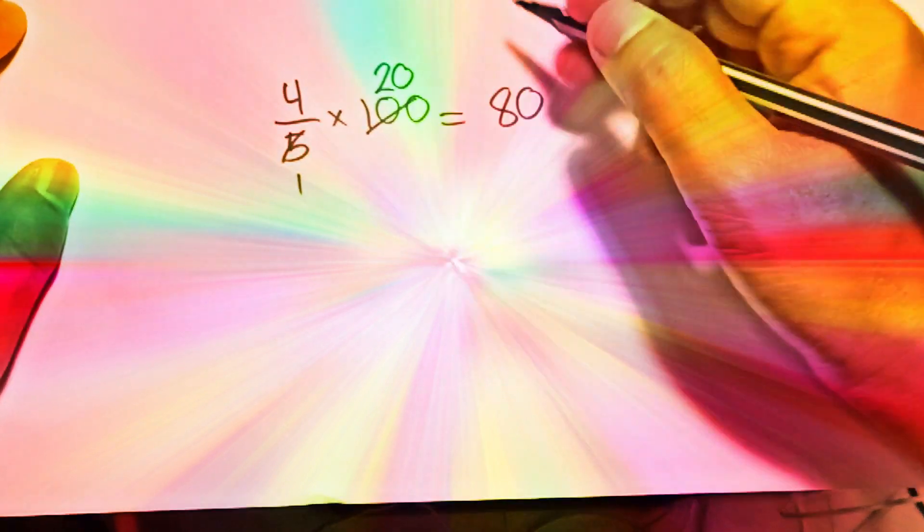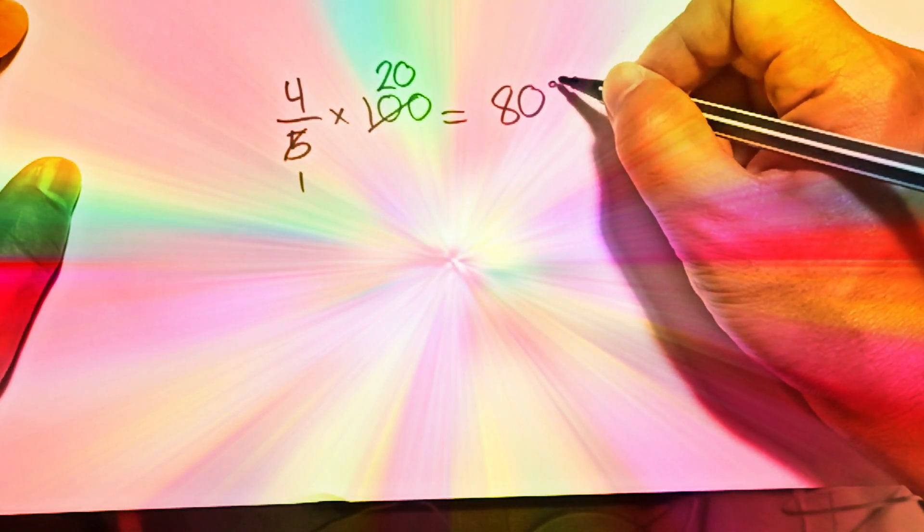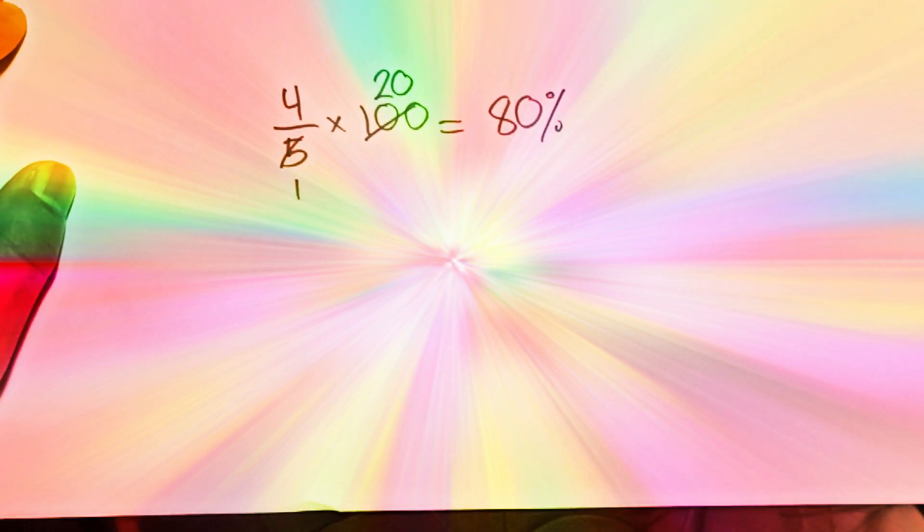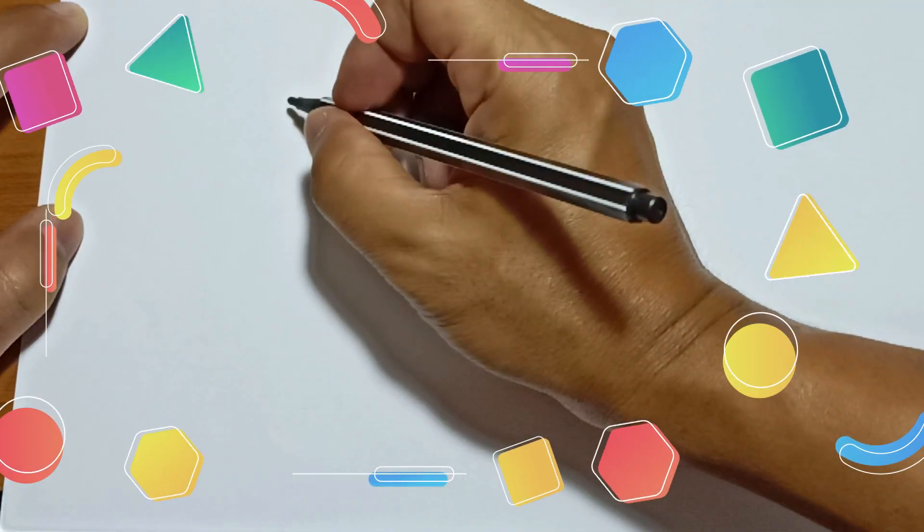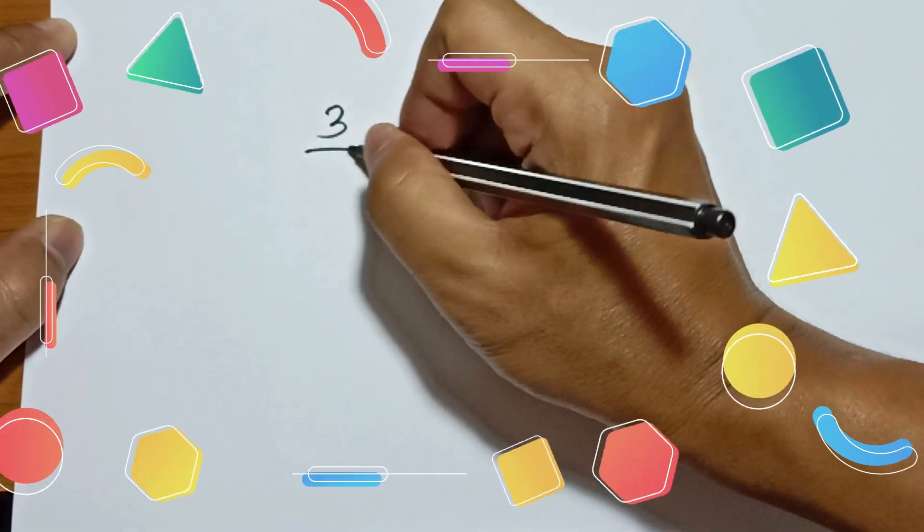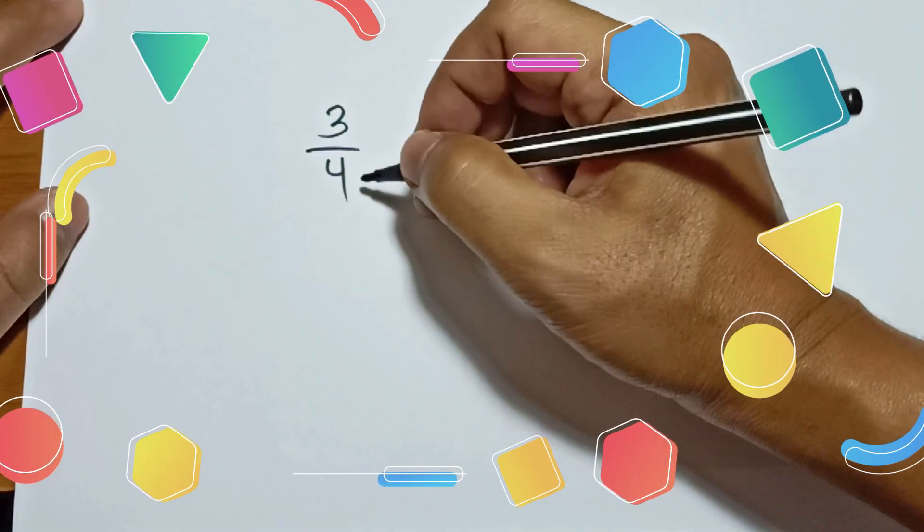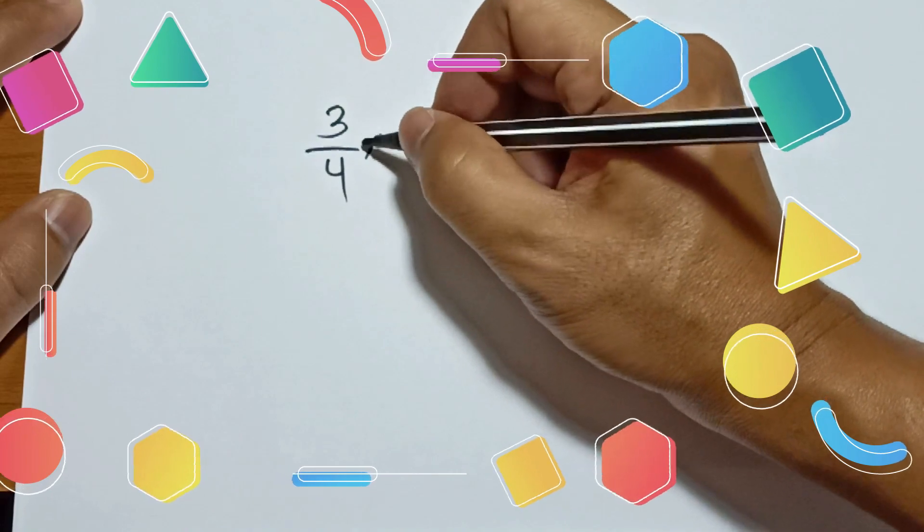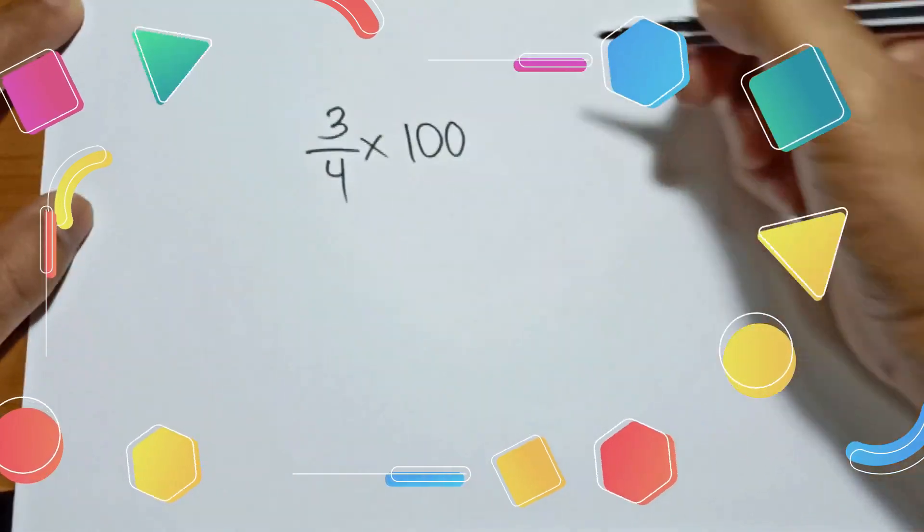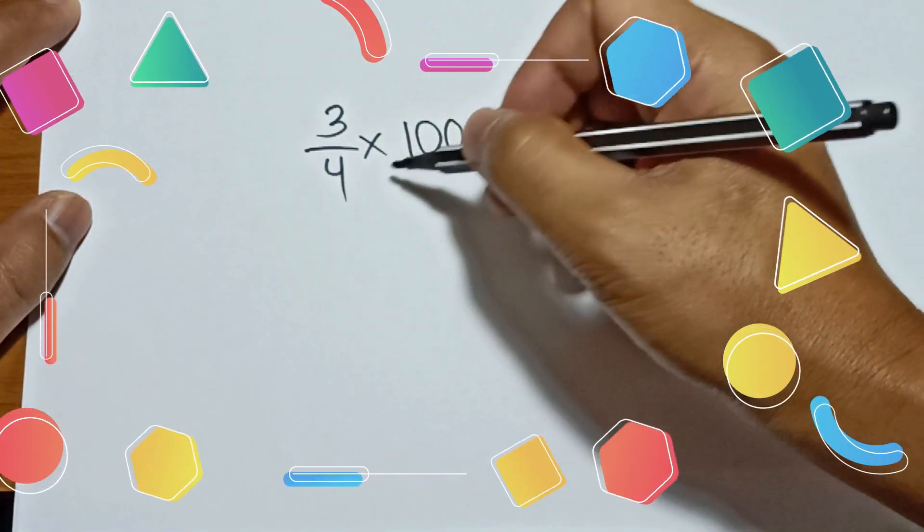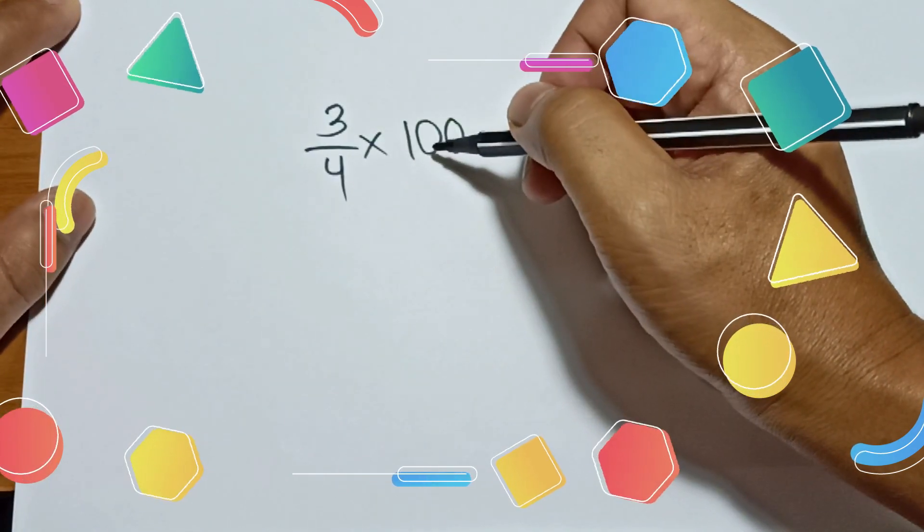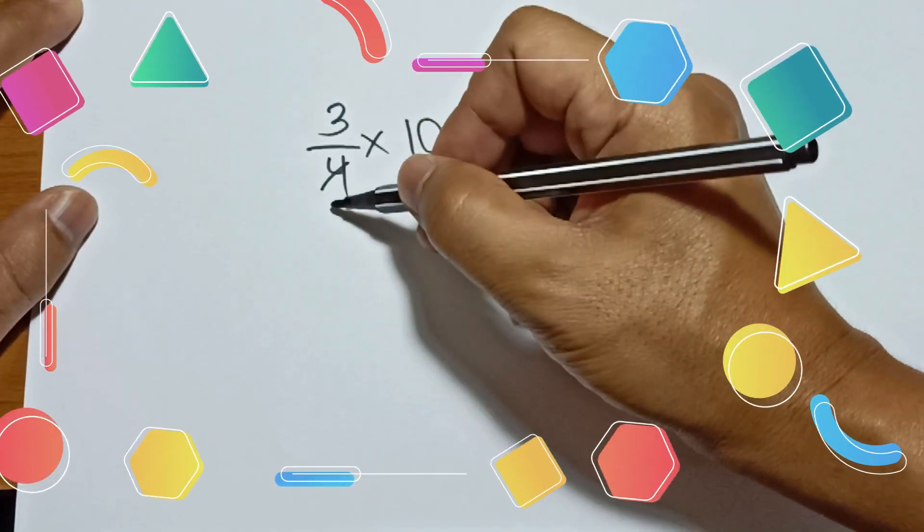So 4 over 5 is 80 percent. Let's take another example. If you have 3 over 4, convert this fraction into percentage by multiplying by 100. As you can see here, 4 is divisible by 2, 100 is divisible by 2, and that is 50. But 2 is still divisible by 2, which is 1.